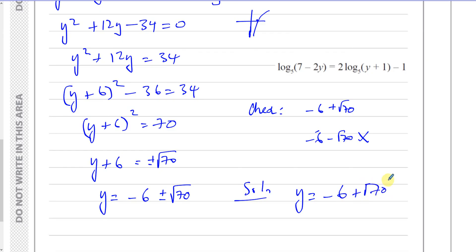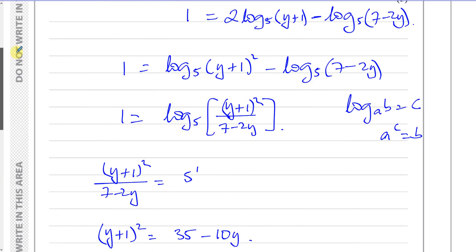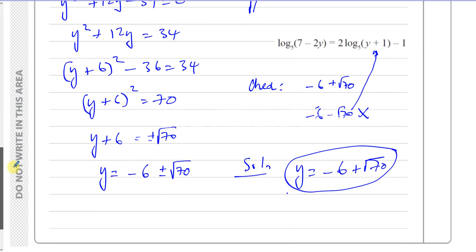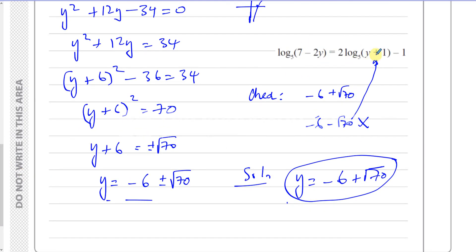Therefore the only solution is y equals minus 6 plus root 70. Many students lose marks in this type of question for this very reason — they solve the equation but forget to check whether their answers make any part of the original equation undefined. You can never have the log of a negative value, because the logarithm graph never touches x equals 0 or goes below it. Always check your solutions.